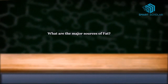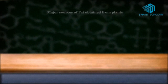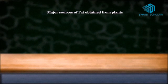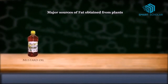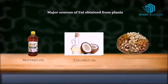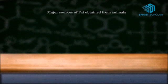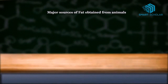What are the major sources of fat? Major sources of fats are obtained from both plants and animals. Plant examples are mustard oil, coconut oil, dry fruits, groundnut oil, etc. Animal sources include butter, ghee, cheese, milk, etc.